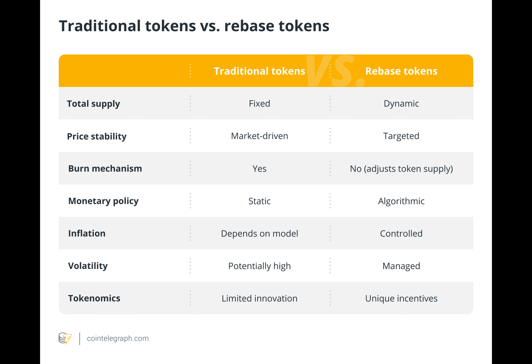The reduction in supply is achieved by adjusting the balance among all holders rather than by actually destroying the token. Rebase tokens adjust these changes to the token supply in an effort to keep prices stable around the intended value.